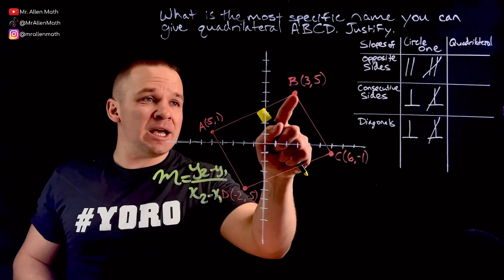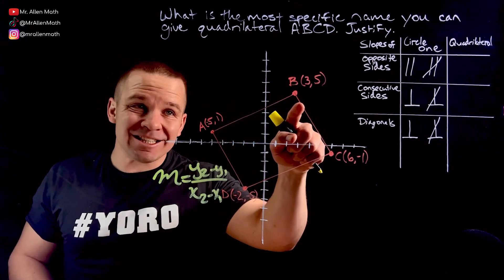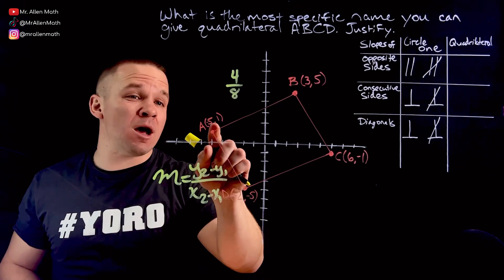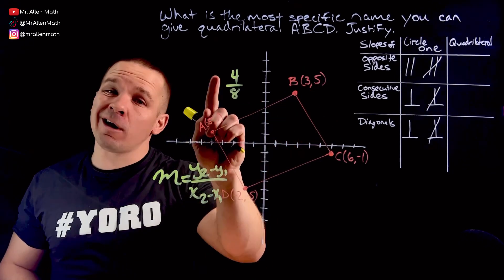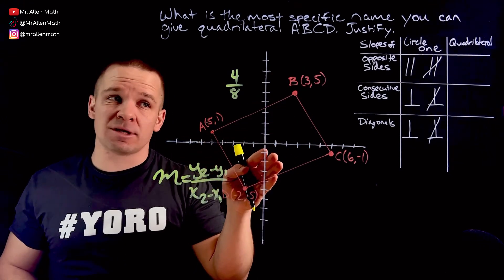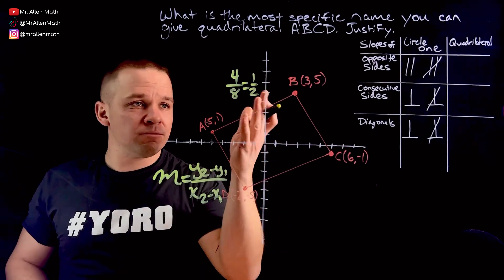To get from A to B, I've got to go up 4, and I've got to go to the right 8. So up 4, over 8. And I can also see that with my numbers. From 1 to 5, I'm going up 4. From negative 5 to positive 3, which are my X values, I'm going to the right 8. Now 4 over 8 simplifies down to 1 half.